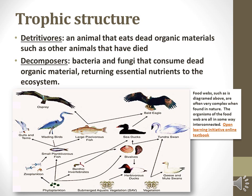Detritivore is the term that describes an organism that eats dead organic material, such as earthworms or some fungi. A decomposer is an organism that breaks down complex organic material, such as an animal carcass.